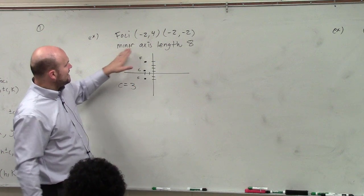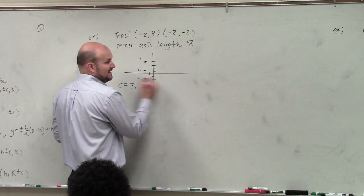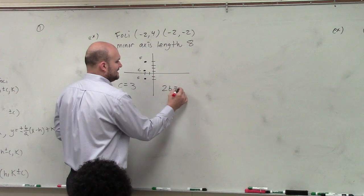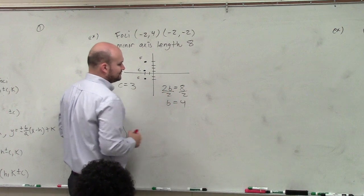The next thing is it says the minor axis length is 8. Well, the minor axis length is 2b. So I know that 2b is equal to 8. Therefore, b is equal to 4. OK.